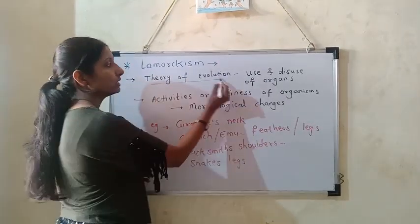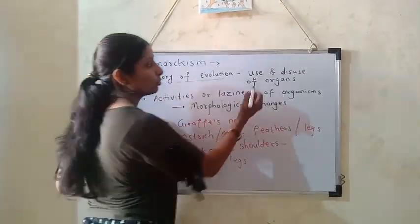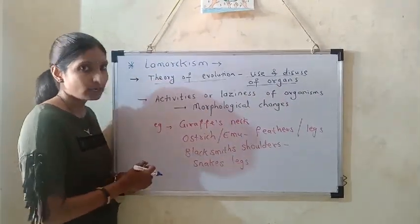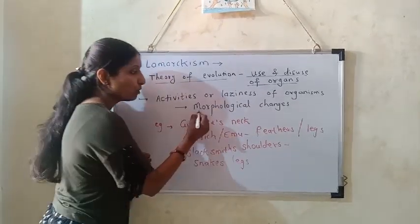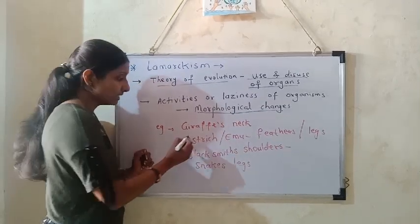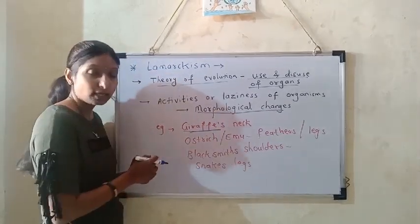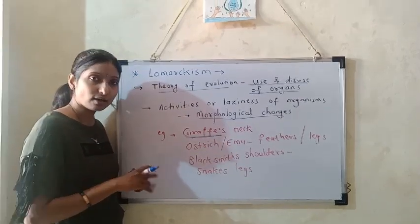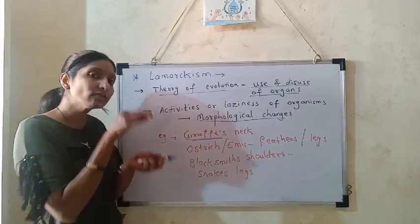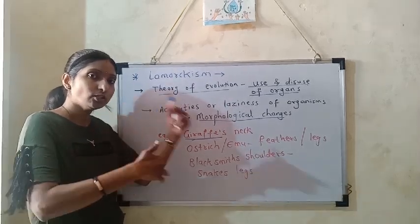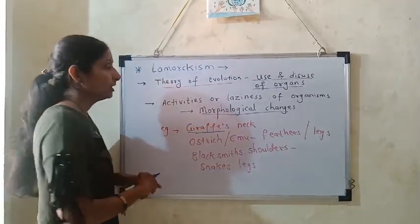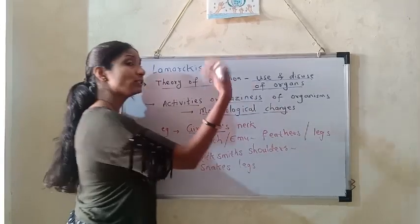The theory of evolution given by Lamarck is also called the theory of use and disuse of organs. According to Lamarck, morphological changes take place in living organisms due to their activities. For example, we all know giraffes. The ancestral giraffe was small in height with a short neck, but slowly, generation after generation, the neck length increased due to the activities and habits of the organism.